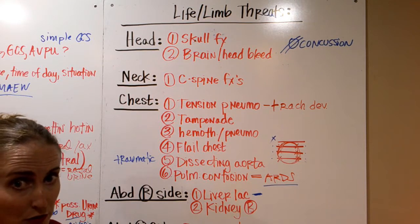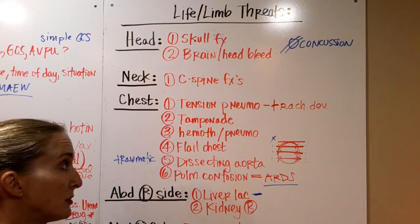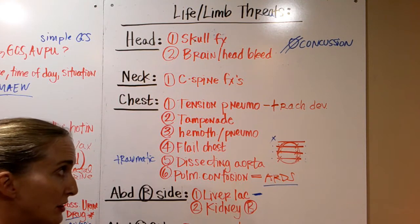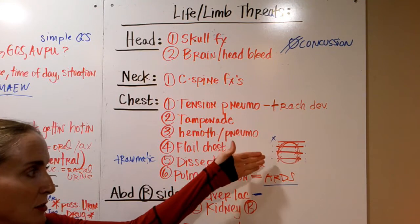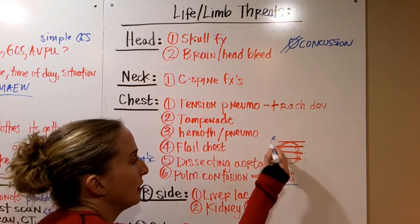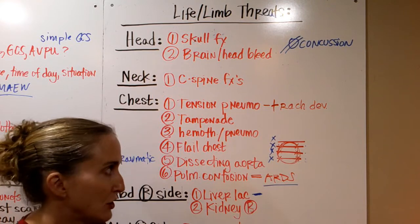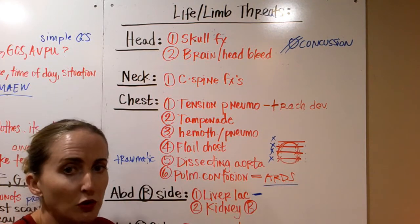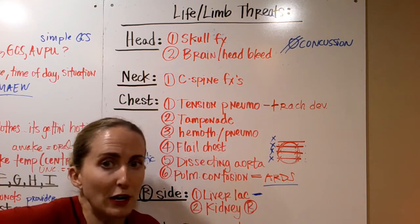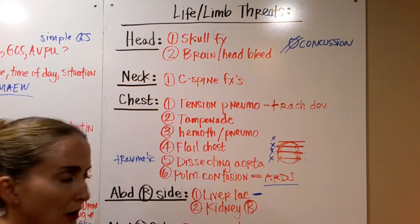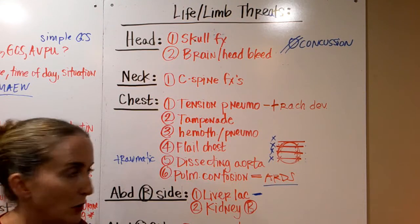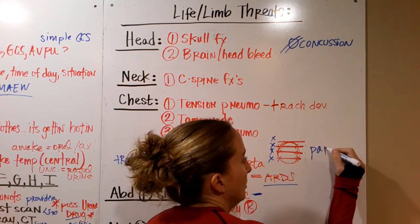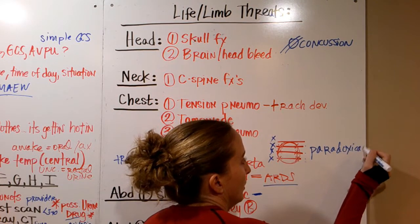In the chest, you've got tension pneumos — visible with tracheal deviation and unequal breath sounds — cardiac tamponade from direct chest trauma, hemothorax, pneumothorax, and flail chest. Flail chest happens with multiple fractures of multiple ribs — you can have a piece lifting up on its own or a whole side fractured, with the rib cage moving independently. This is called paradoxical chest movement.